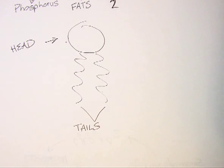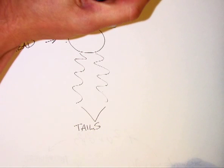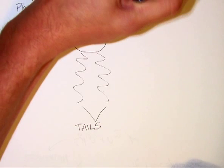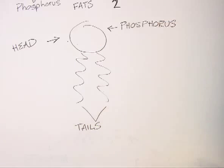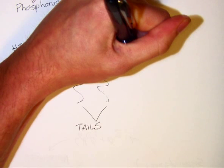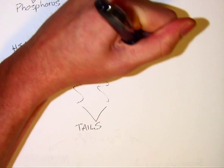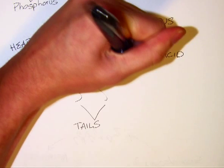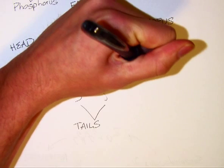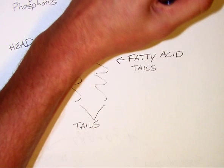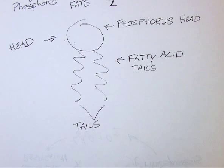The head is the part made of phosphorus — the phosphorus head. The tails are the parts that are fats, made up of the monomer of lipids: fatty acids. So we have a phosphorus head and fatty acid tails.